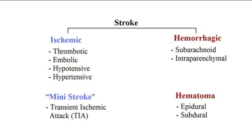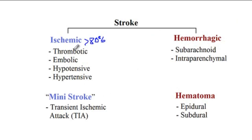There are two different forms of stroke. Ischemic stroke, which accounts for more than 80% of the cases of strokes, and then hemorrhagic stroke, which accounts for less than 20% of the cases of strokes. In a separate video, I have discussed the hemorrhagic stroke as well as hematoma. Here I'm going to focus on ischemic stroke as well as mini stroke, also known as transient ischemic attack.